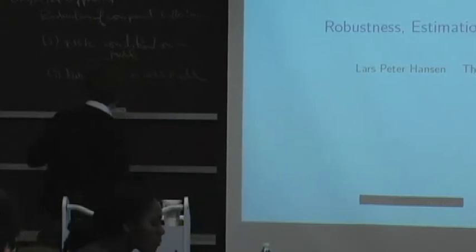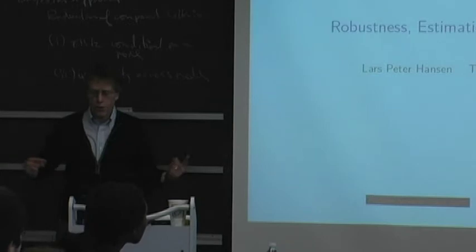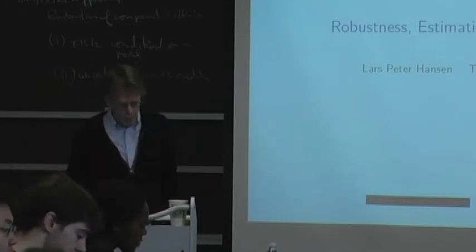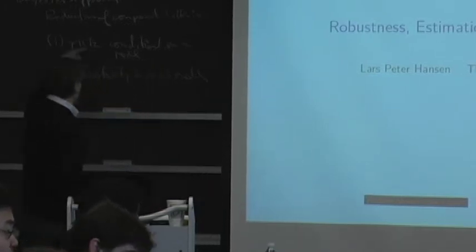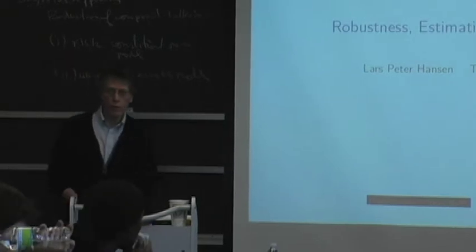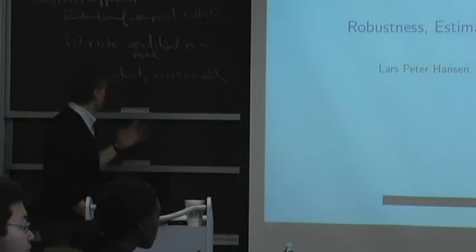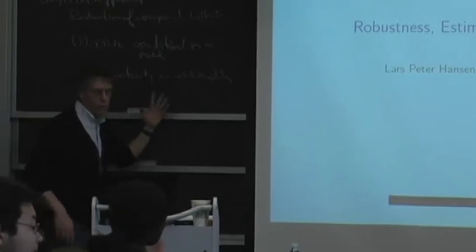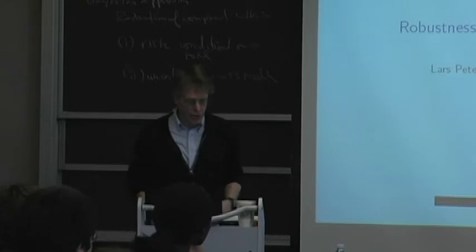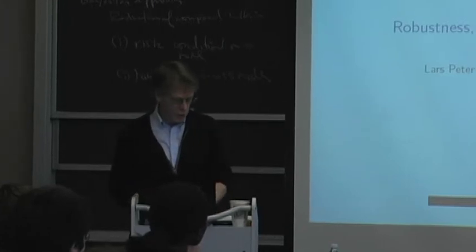Now, this whole literature on risk and uncertainty, ambiguity, concern about model misspecification and the like, is going to break apart these two different steps, and that's going to be really critical. We're going to be thinking differently about risk condition on a model from uncertainty across models. We're going to be thinking about decision makers as really confronting these in rather different ways.